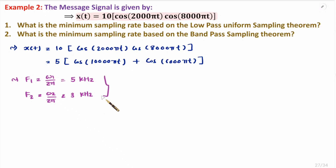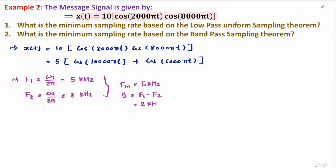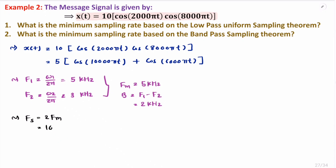Based on these two frequencies, the maximum frequency FM is 5 kilohertz, and the bandwidth is the difference between the two: f1 minus f2 equals 2 kilohertz. Now, for the first question, we need to identify the sampling rate based on the low-pass uniform sampling theorem. As per the low-pass uniform sampling theorem, the sampling frequency is simply 2 times FM — that is the Nyquist rate. So that is 2 times 5, which equals 10 kilohertz.